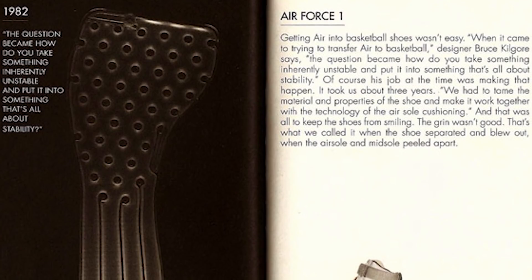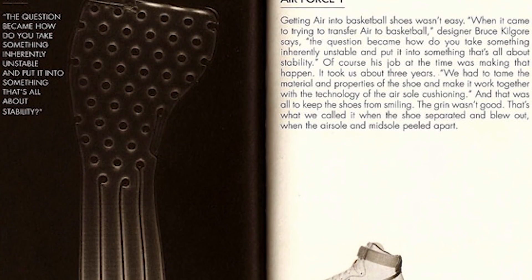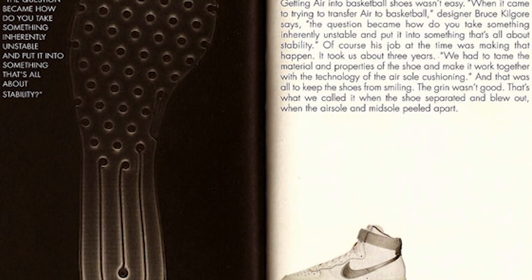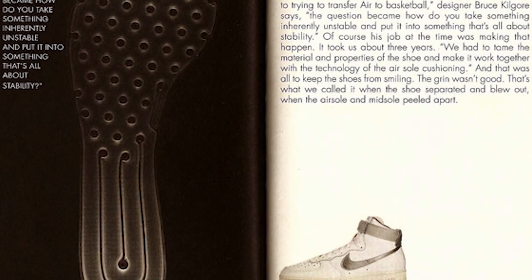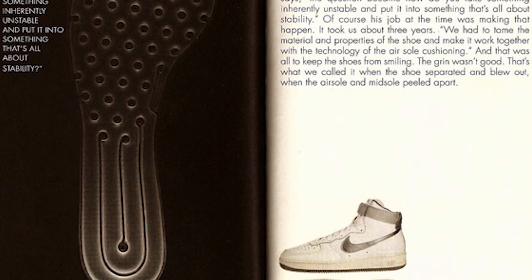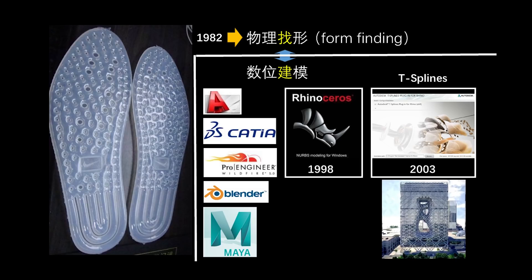这种找形方式有一个问题：找出来的形往往不那么精准。它有80%是被设计师控制的——设计师控制了成型逻辑，但没有100%控制最终几何。为了精确控制物体的最终几何，人们发展出数位建模方式，比如AutoCAD、Catia——Catia最初是为飞机制造公司做曲面而诞生的建模软件，之后还有Pro-E等。